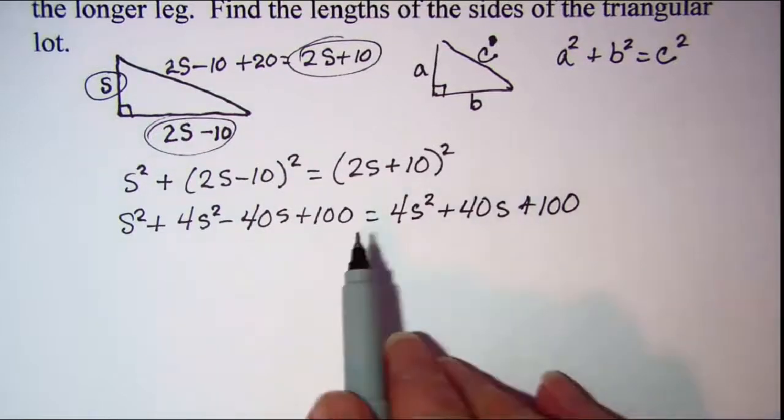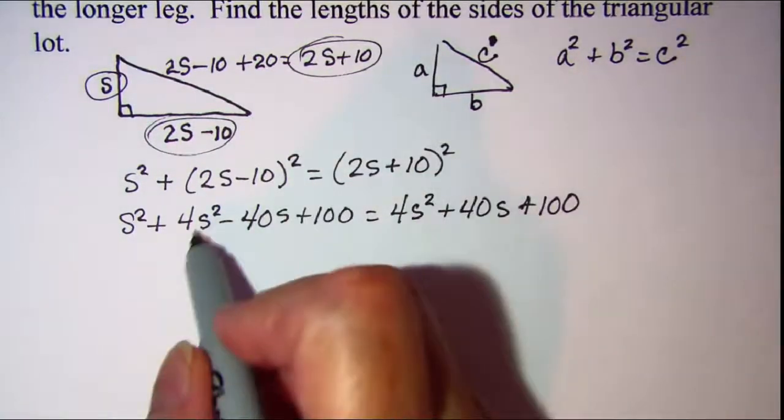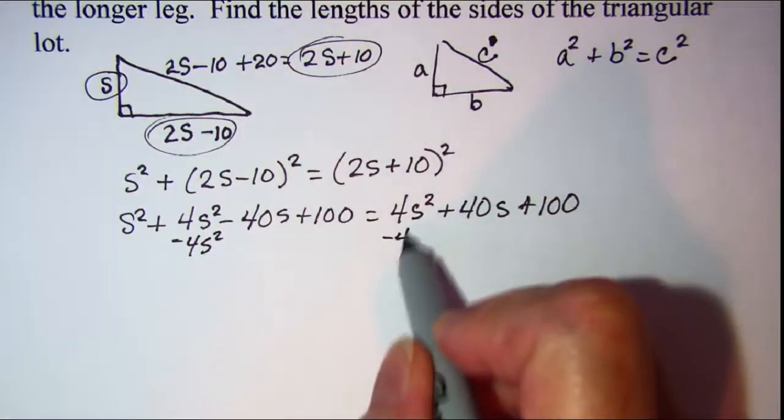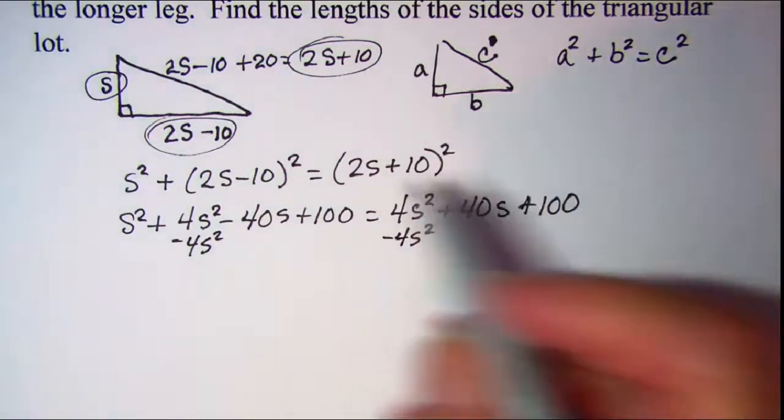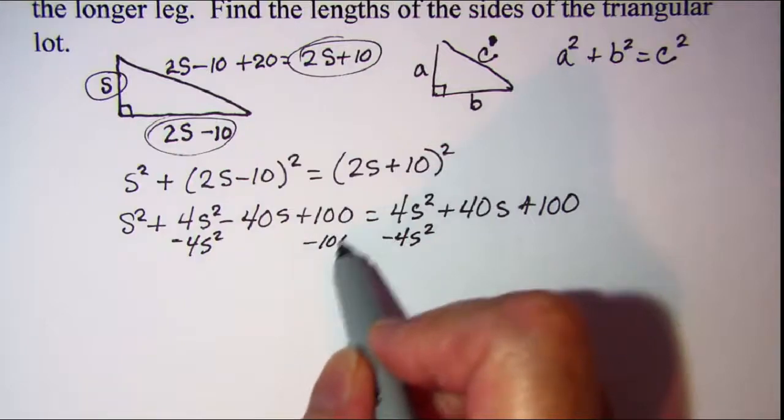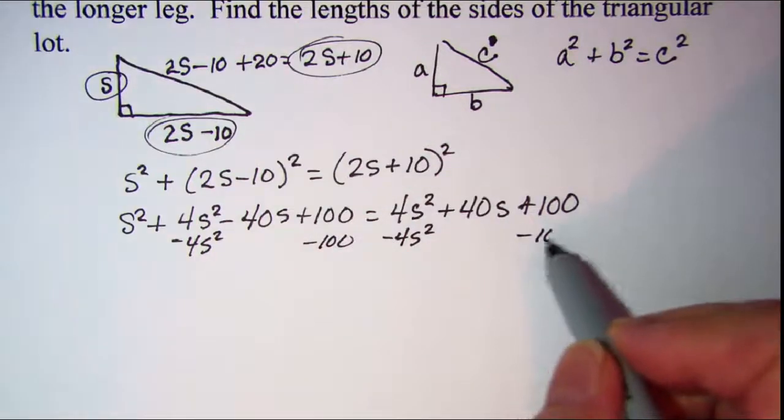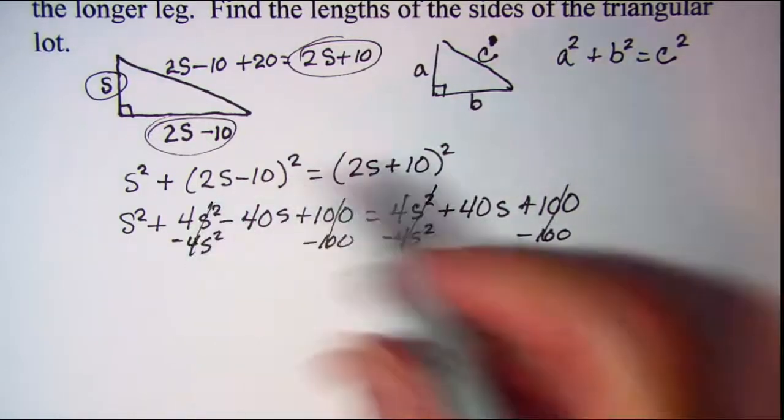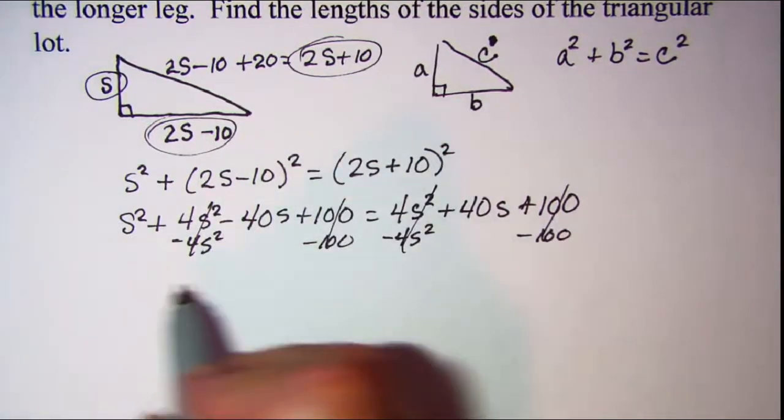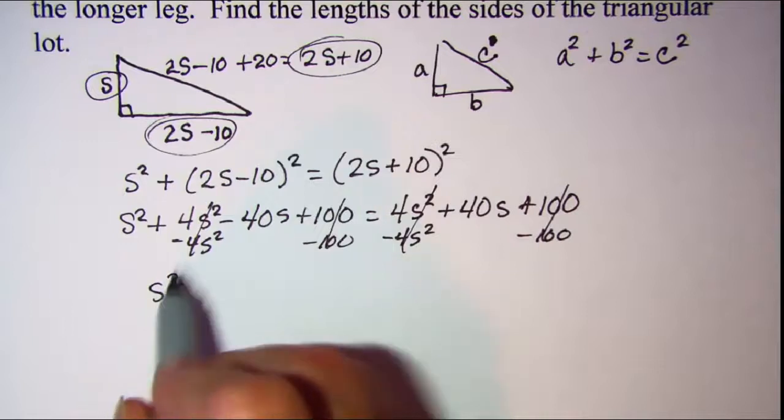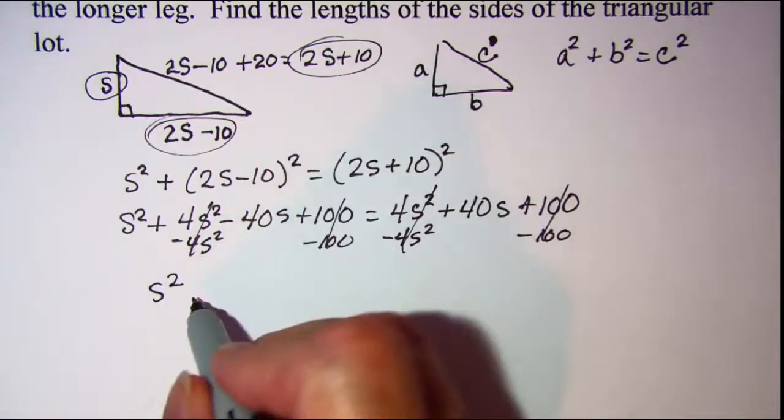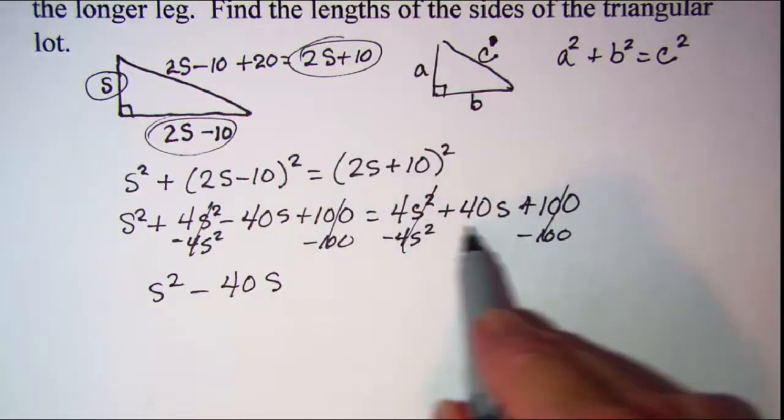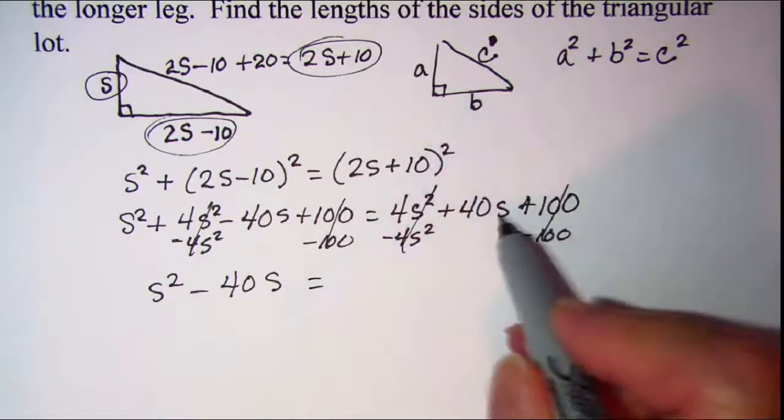Now I can see some things that are canceling right off the bat here. I'm going to subtract 4s squared from both sides, and I'm going to subtract 100 from both sides, just to simplify my equation a little bit, and so I have s squared minus 40s equals 40s.